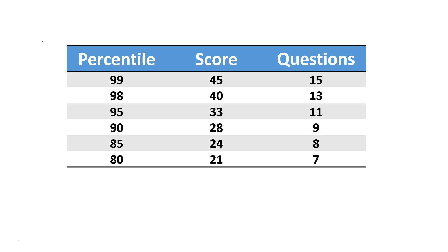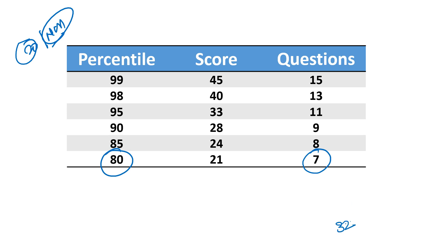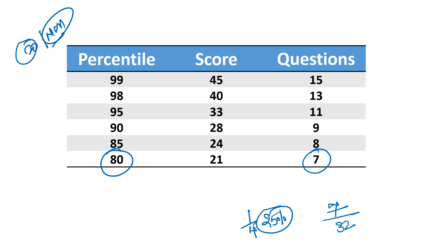To get a call from IIMs — even the good IIMs, the top 20 IIMs — when non-IIMs also exist, what should be the bare minimum cutoff? The bare minimum cutoff is 80 percentile. To crack this 80 percentile, don't worry about the score — score will depend on your accuracy. Only focus on getting this 80 percentile. How many questions do you need to attempt? You need to attempt only 7 questions. So 7 questions out of 32 — that is less than one-fourth, less than 25 percent of the total LRDI segment. If I attempt 25 percent of the paper, I get 80 percentile. Out of 32 questions, I need to choose only those 7 questions with the highest accuracy to get 80 percentile.